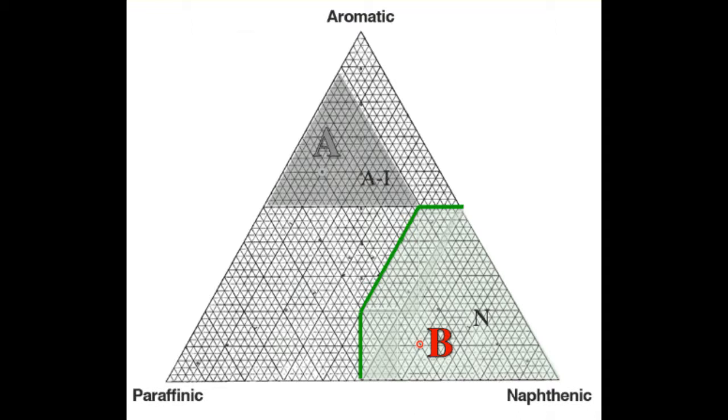Naphthenes are 60%. So if we locate the 60% naphthenes line, the intersection of these two lines, 10% aromatics and 60% naphthenes, will place B in the naphthenic region. So crude B is a naphthenic crude.